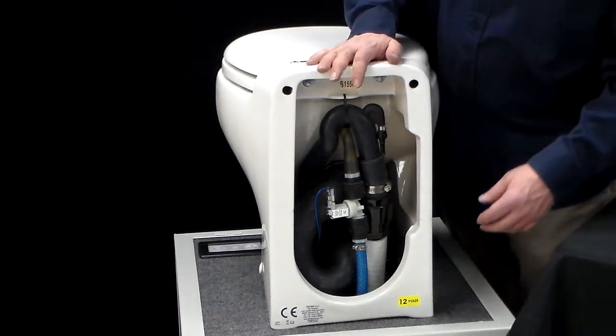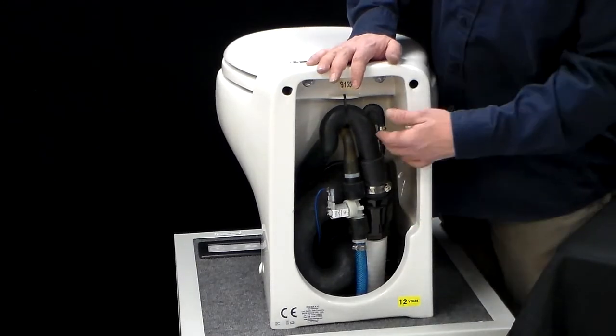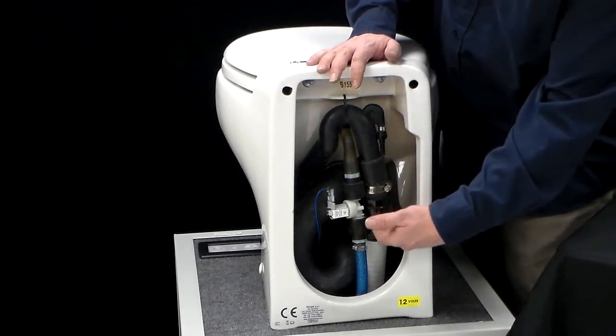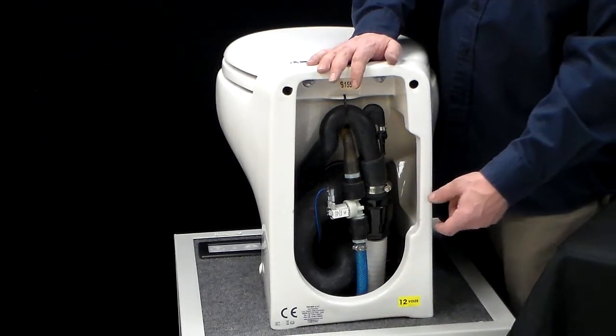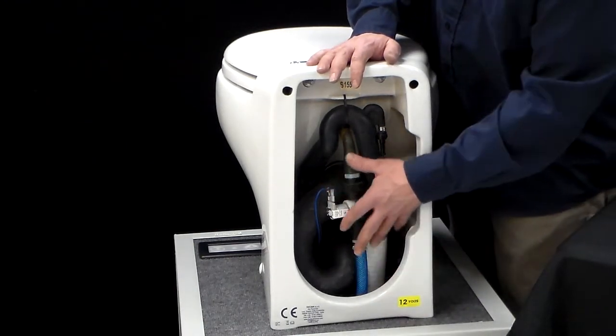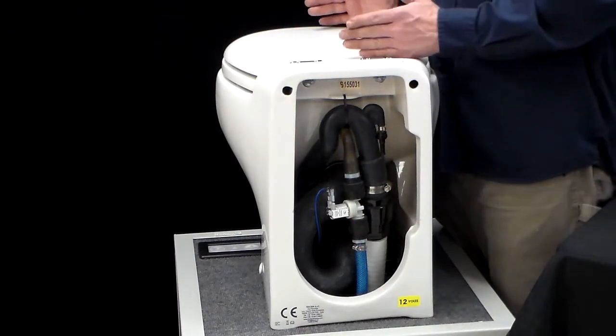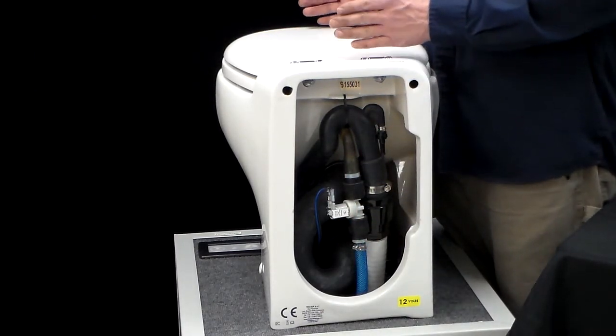Tall models of the Tecma Silence have all the guts above the floor as you see here. In the shorter deep bowl models, these guts actually drop down about four to five inches below the deck to accommodate all the space needed yet still give you a comfortable deep bowl for the waste and water.